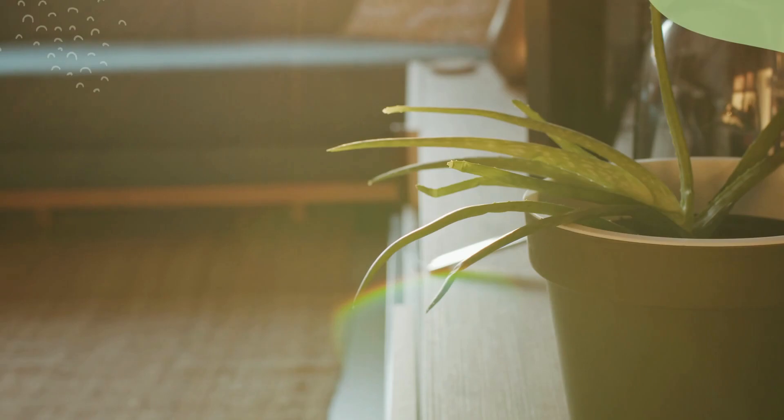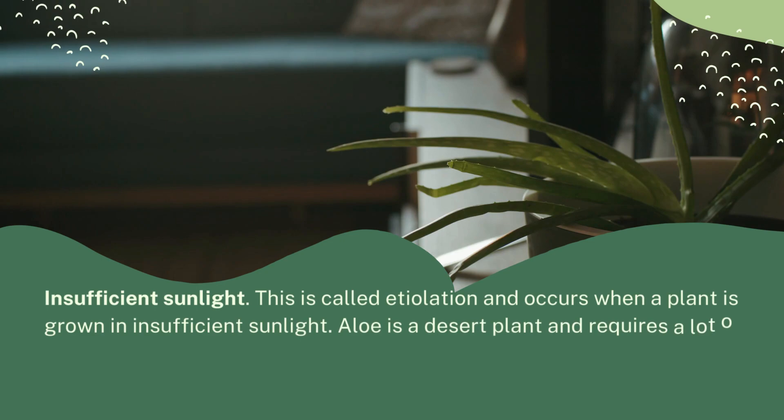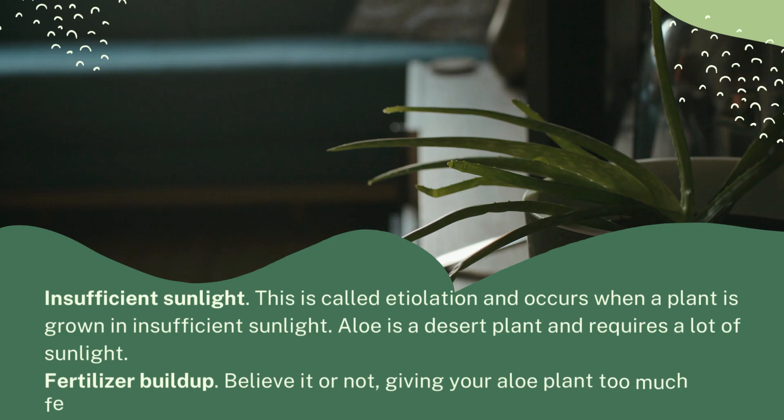Nourish your plants with a nitrogen-based fertilizer to ensure happy healthy plants. Insufficient sunlight, called etiolation, occurs when a plant is grown in insufficient sunlight. Aloe is a desert plant and requires a lot of sunlight. Fertilizer buildup: believe it or not, giving your aloe plant too much fertilizer can also kill it.